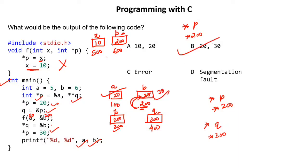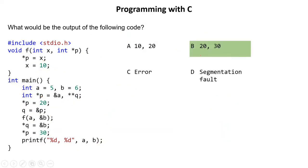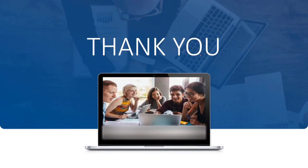So the answer is B, that is 20 and 30. Hope you understood what this pointer question was all about. In the next upcoming session we'll discuss more questions on pointers. Thank you so much for watching — please like, subscribe, and share the channel.